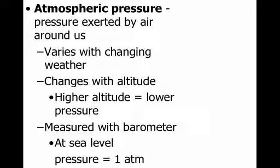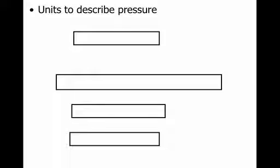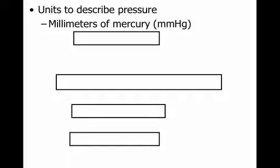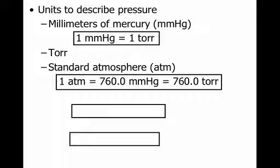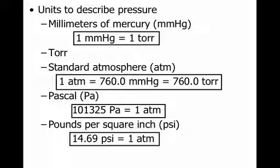At sea level, our pressure is equal to 1 atm, and where we live, our atmospheric pressure is usually really close to 1 atm as well. There are several units to describe pressure. One unit is millimeters of mercury, because a barometer has mercury in it. Torr is another measurement. So 1 atm is equal to 760 millimeters of mercury, which is equal to 760 torr. A Pascal: 101,325 Pascals is equal to 1 atm. And the one you may have heard of is pounds per square inch, or psi — 1 atm is equal to 14.69 psi.